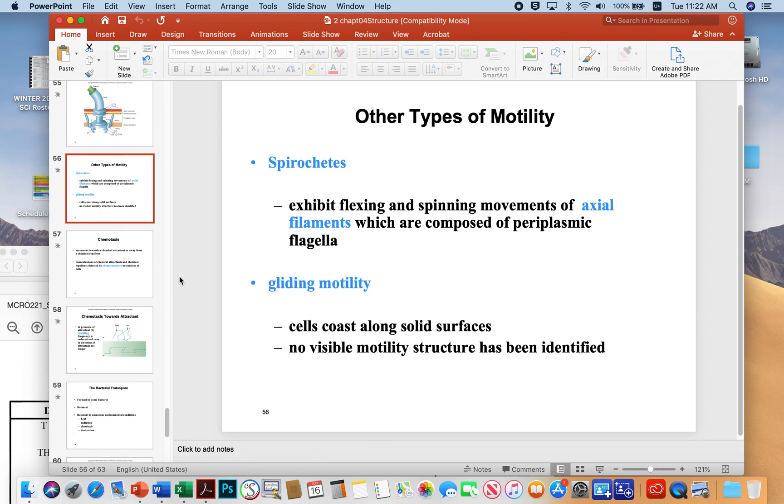Some other types of motility: Spirochetes, like the bacteria that cause Lyme disease or syphilis, exhibit flexing and spinning movements using axial filaments. These are periplasmic flagella that run through the periplasm of the bacteria. Gliding motility usually means that microbes can produce a slick slime that allows them to skate along the surface.